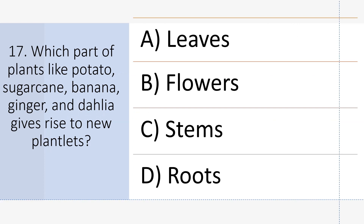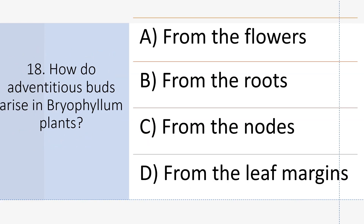Which part of plants like potato, sugarcane, banana, ginger, and dahliya gives rise to new plantlets? Answer C: Stems. How do adventitious buds arise in Bryophyllum plants? Answer D: From the leaf margins.